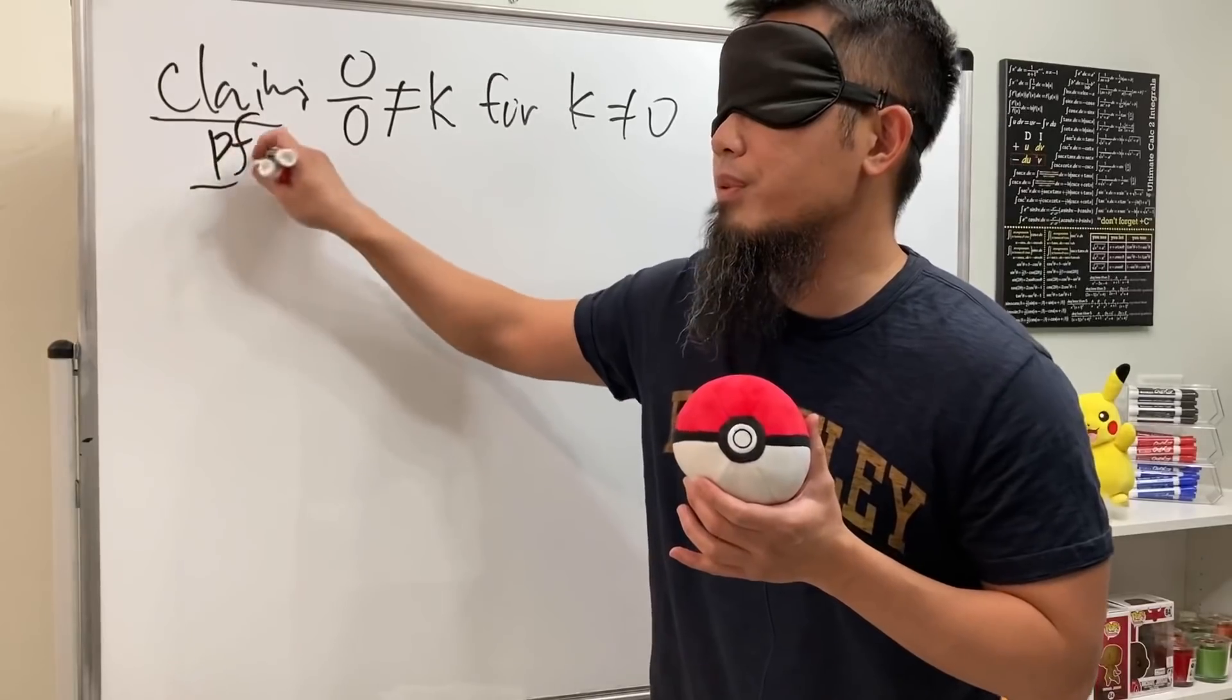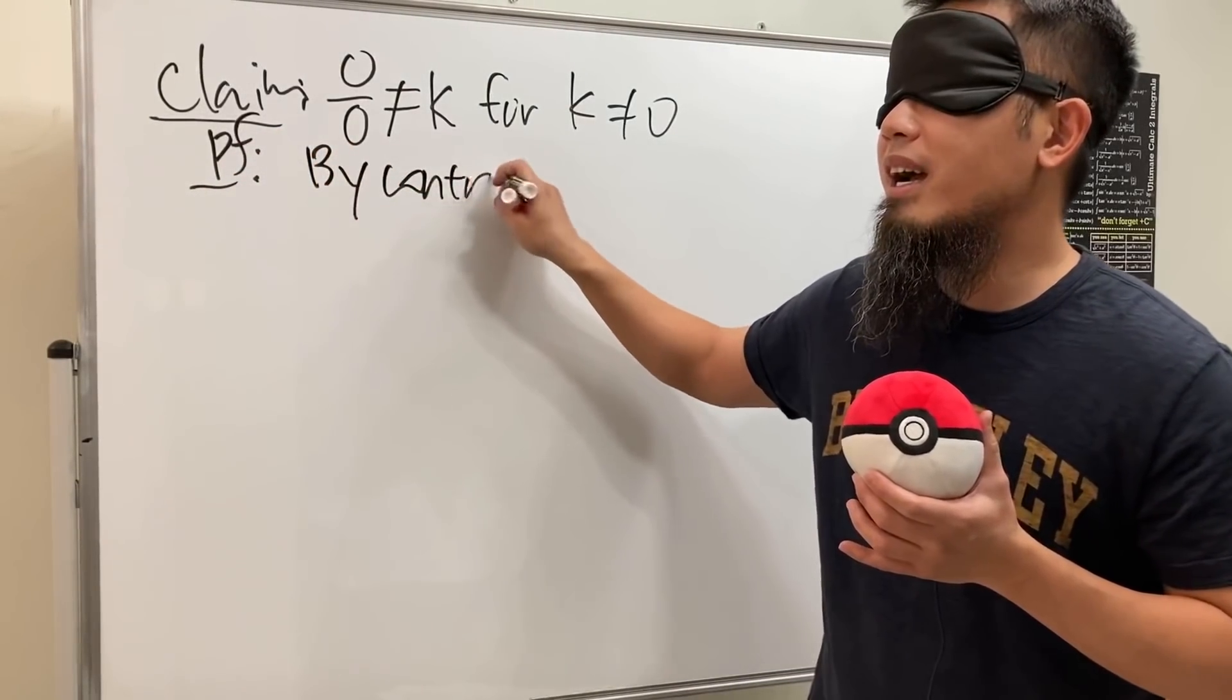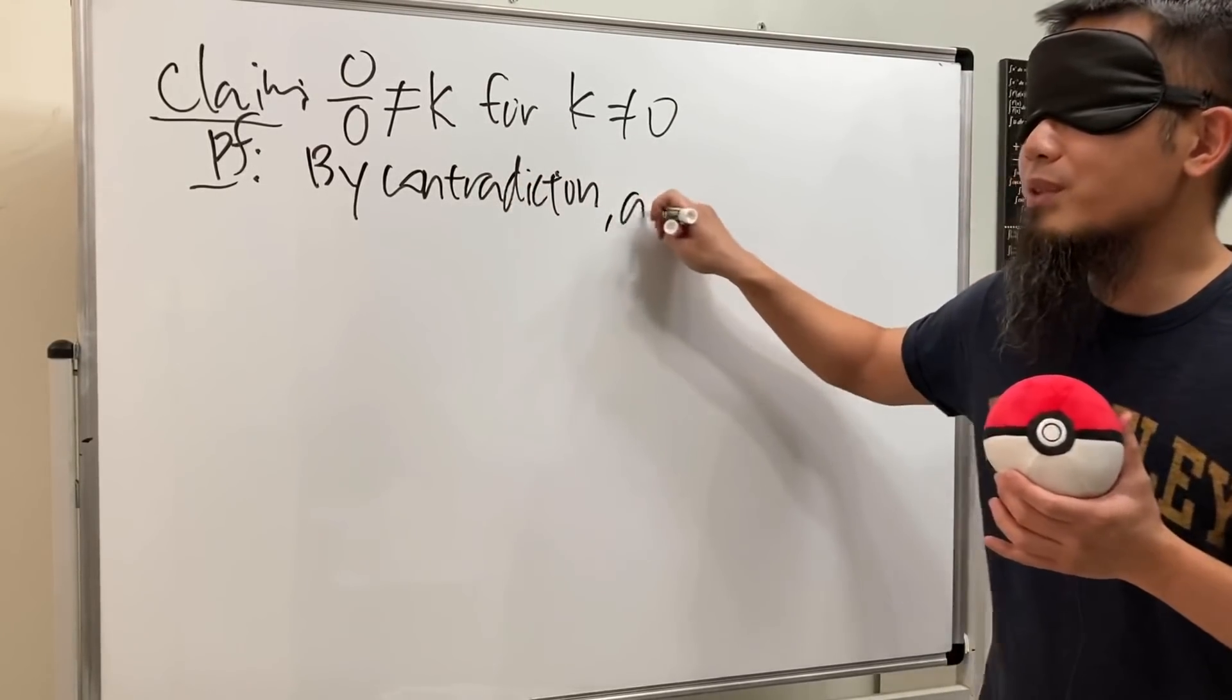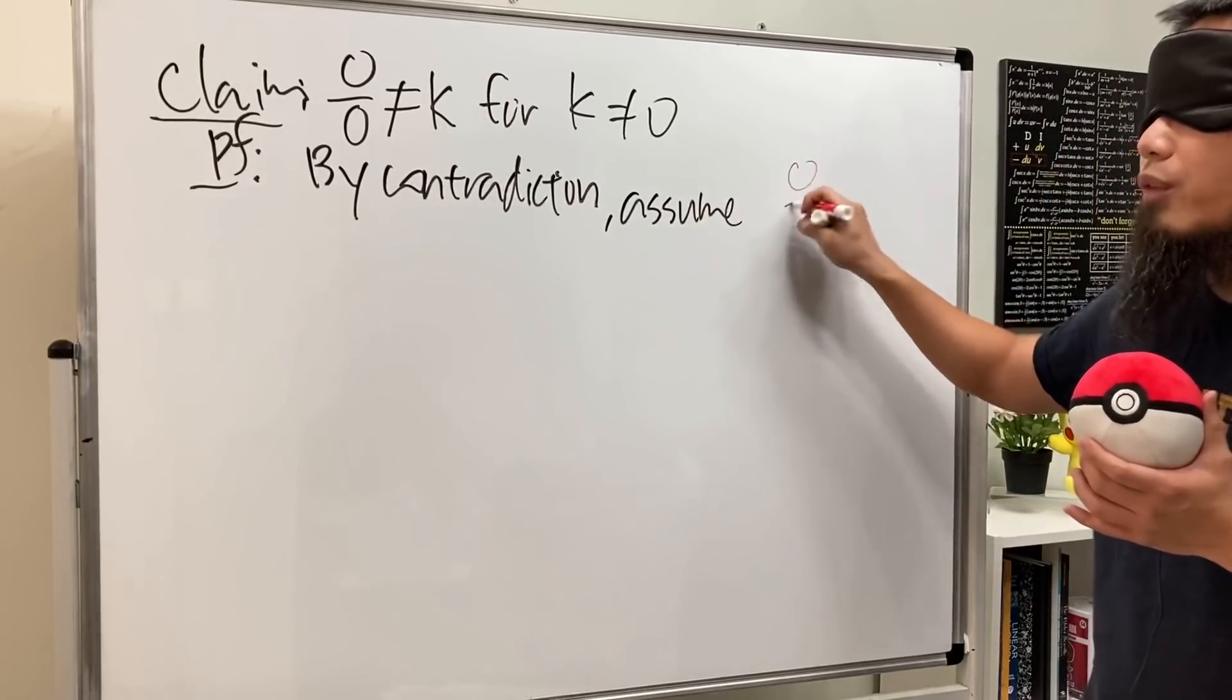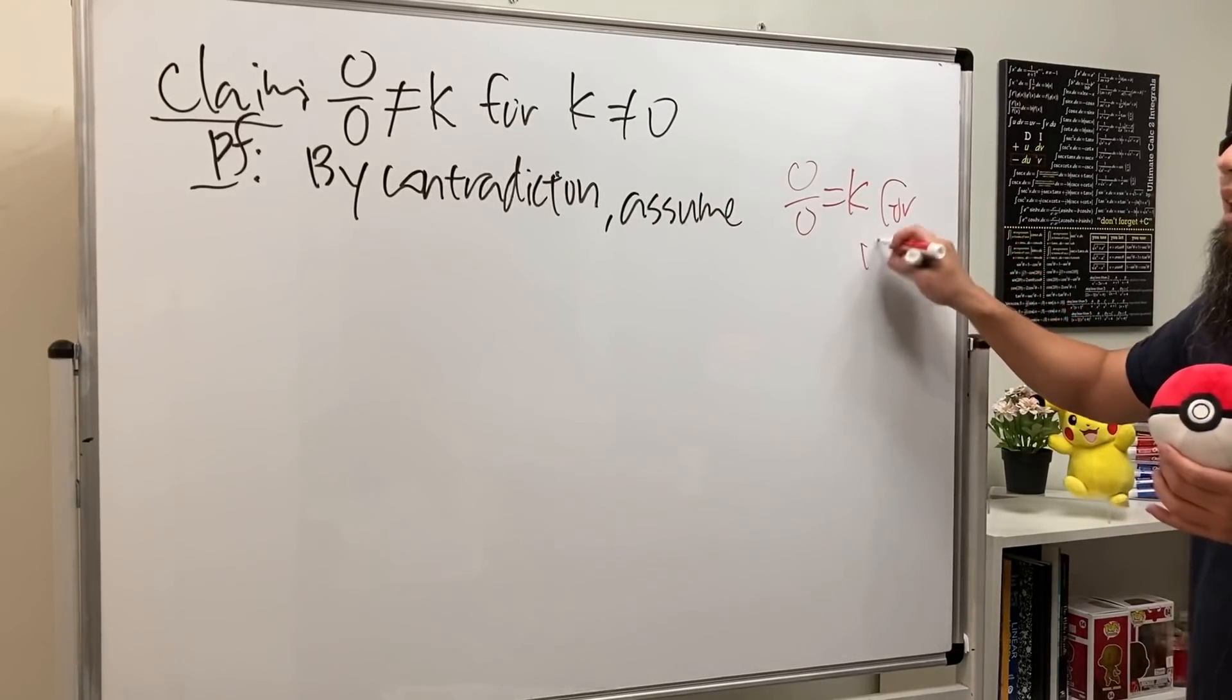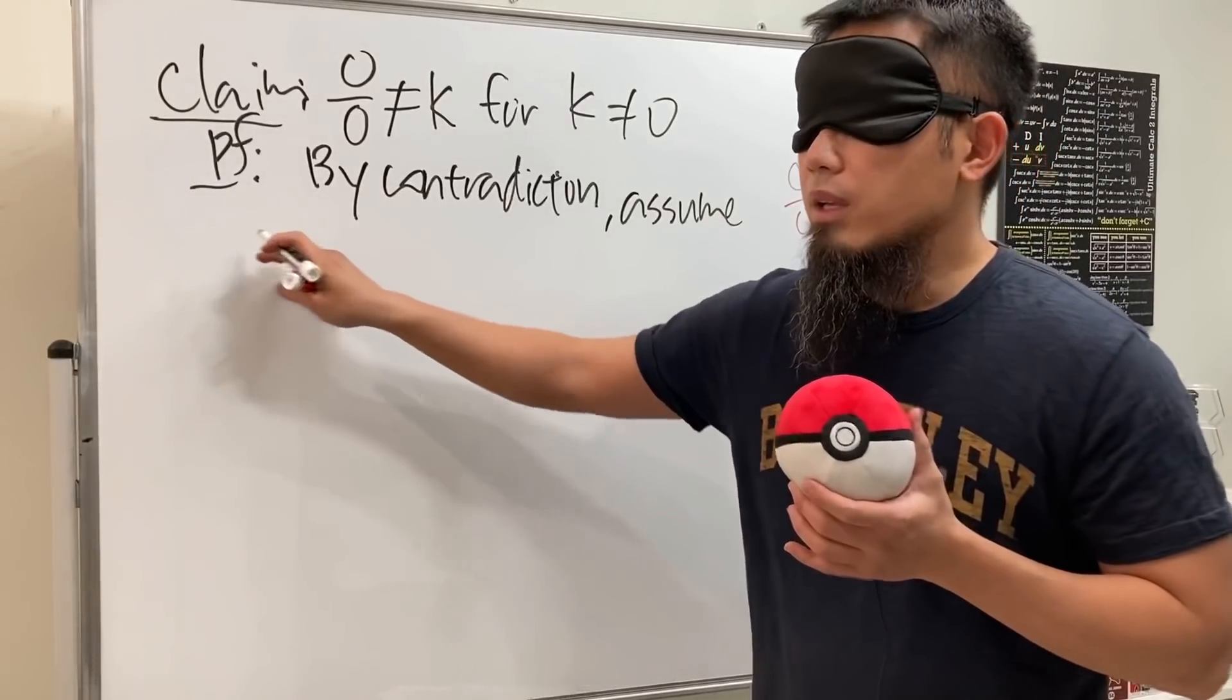I'll go ahead and write down pf for proof. And of course we'll do this by contradiction, assume. We're going to assume for the opposite. So here we have zero over zero, let's say put this down as k, for k not equal to zero. And now let's see what will happen.